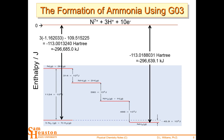In Gaussian, the reference point is separated nuclei and electrons, which is why all the enthalpy and Gibbs energy values were so large and negative. You added up those huge negative values for products and subtracted the reactants, and the result — sometimes positive, sometimes negative — represents a small difference at the bottom of that energy scale.